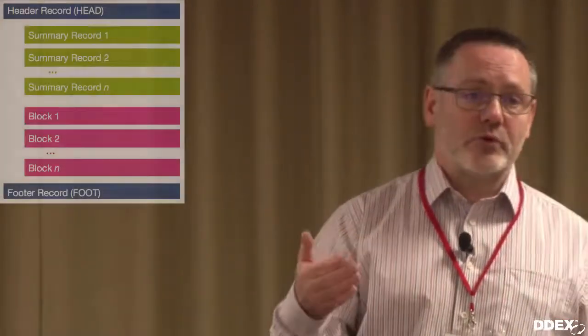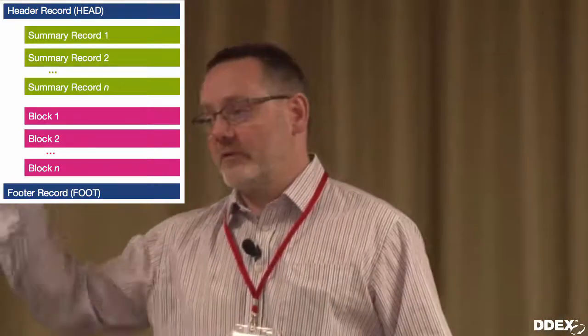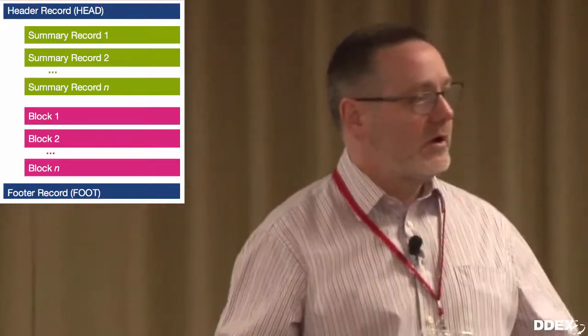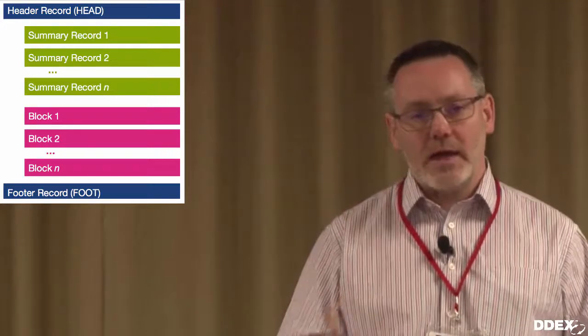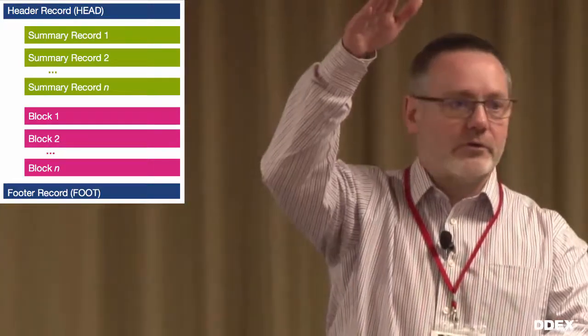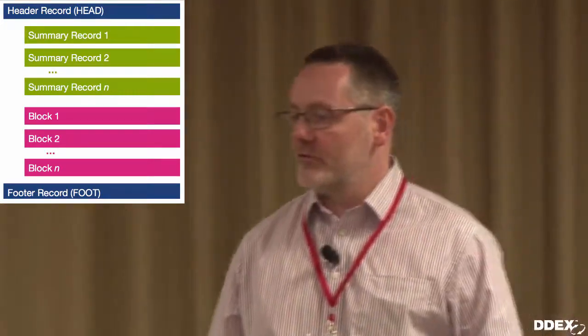Those files are broken into different blocks to describe what's the release that has been distributed. In many cases you also need to describe what's the sound recording, music video, or resource that has been distributed, and then you have the sales and usage information — how often, what's the price, what's the revenue generated. In addition, you have summary information so someone can see at a glance the total revenue. And because it's a flat file, you need a header and a footer so that people know when they've reached the end of the file.